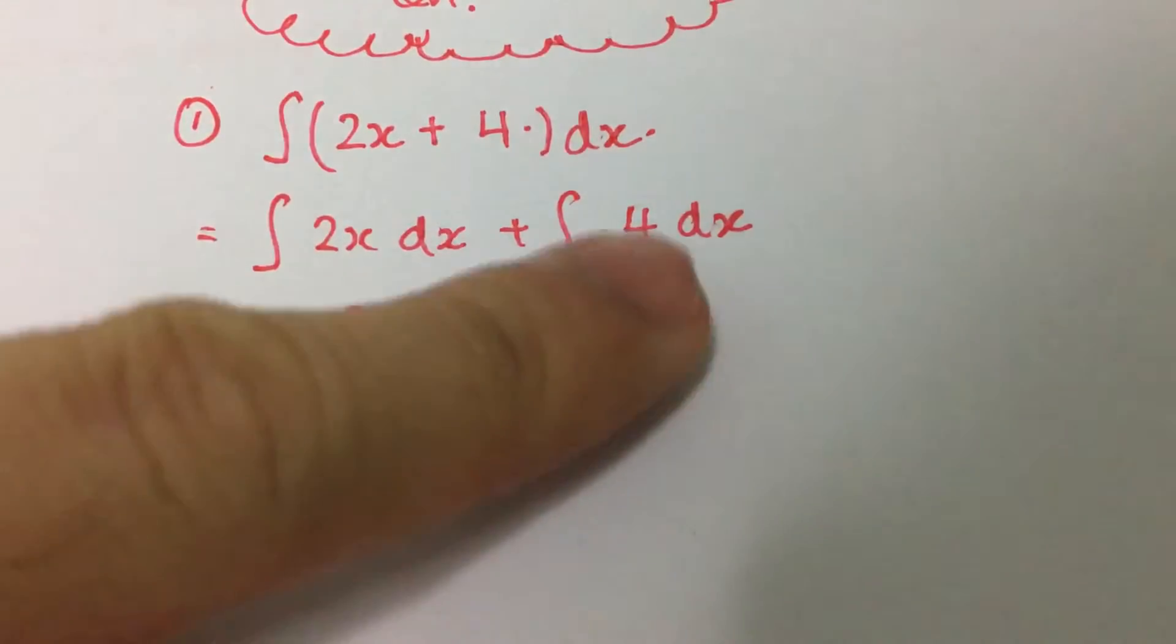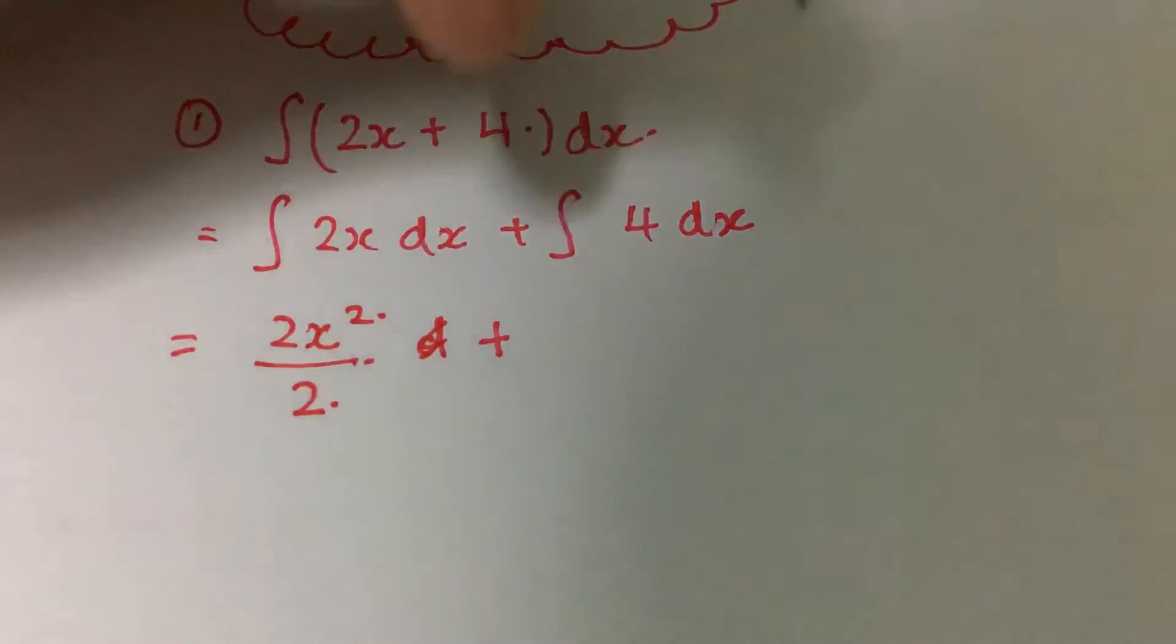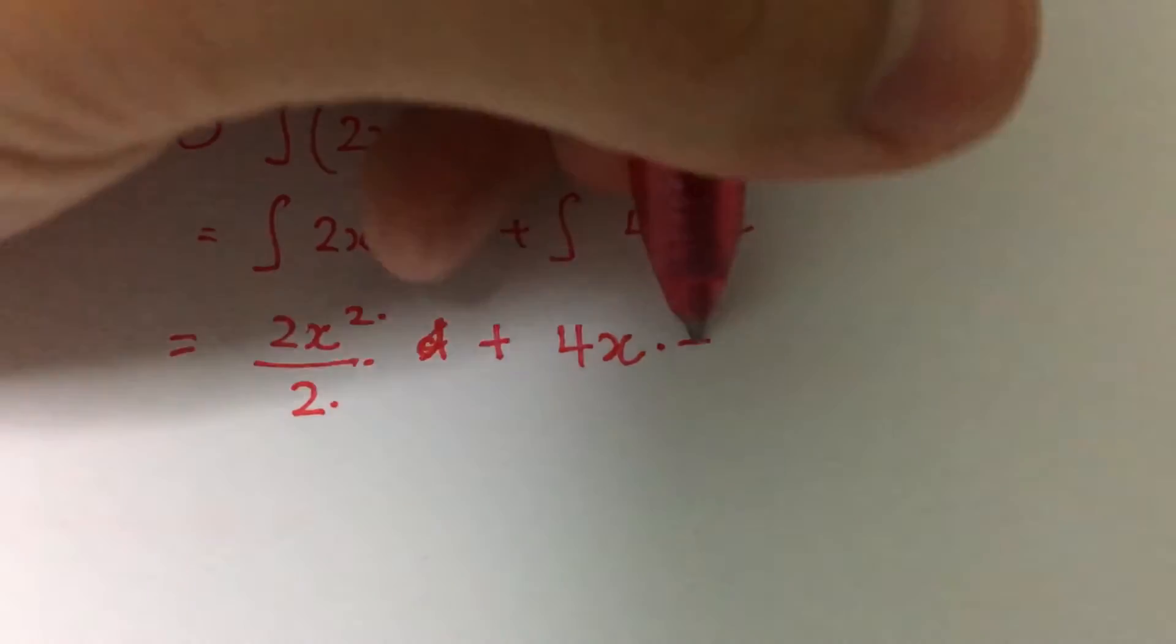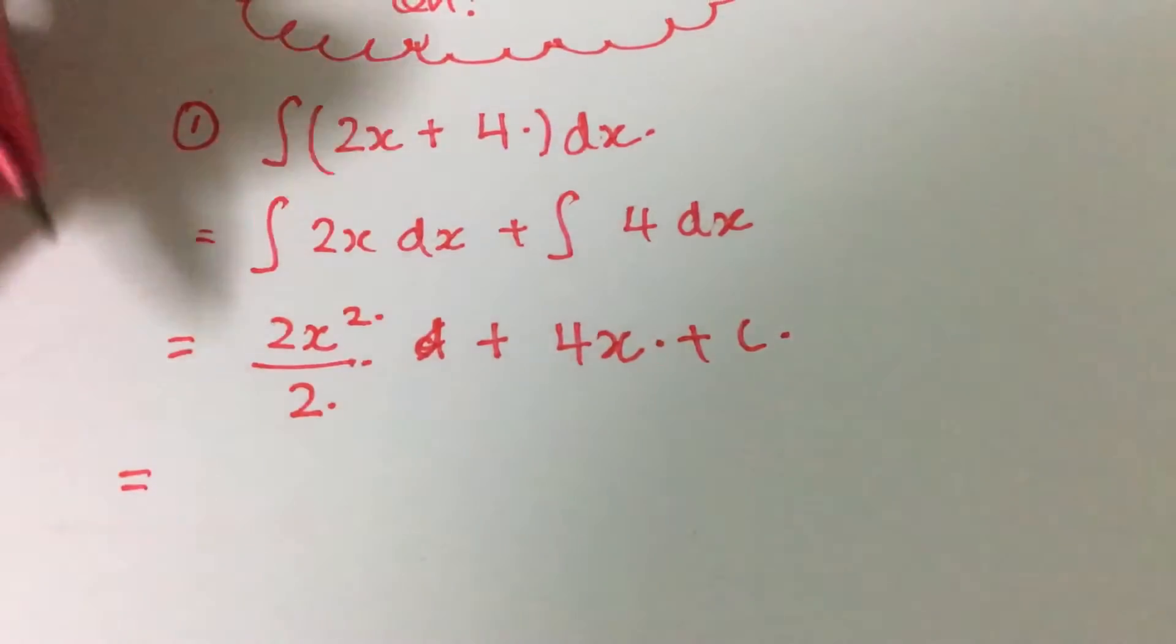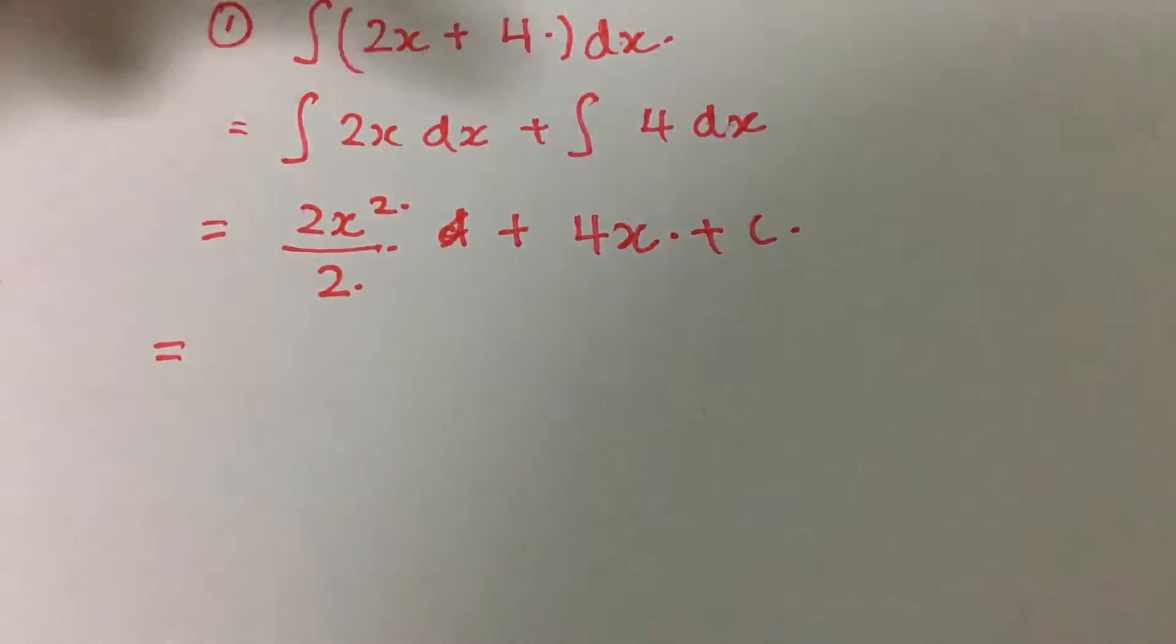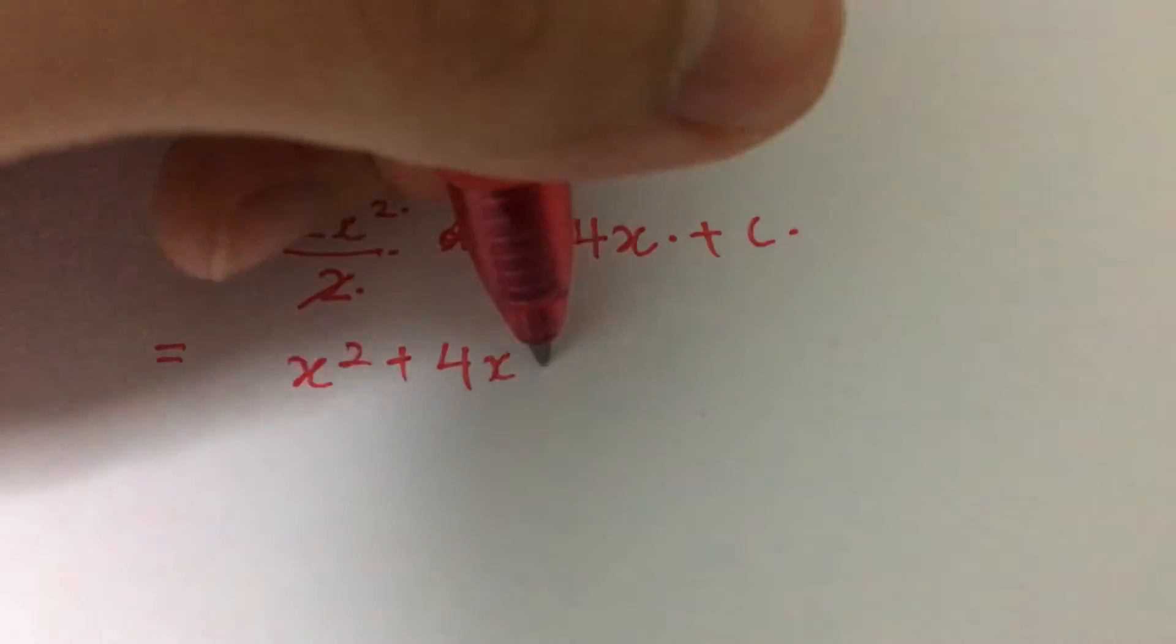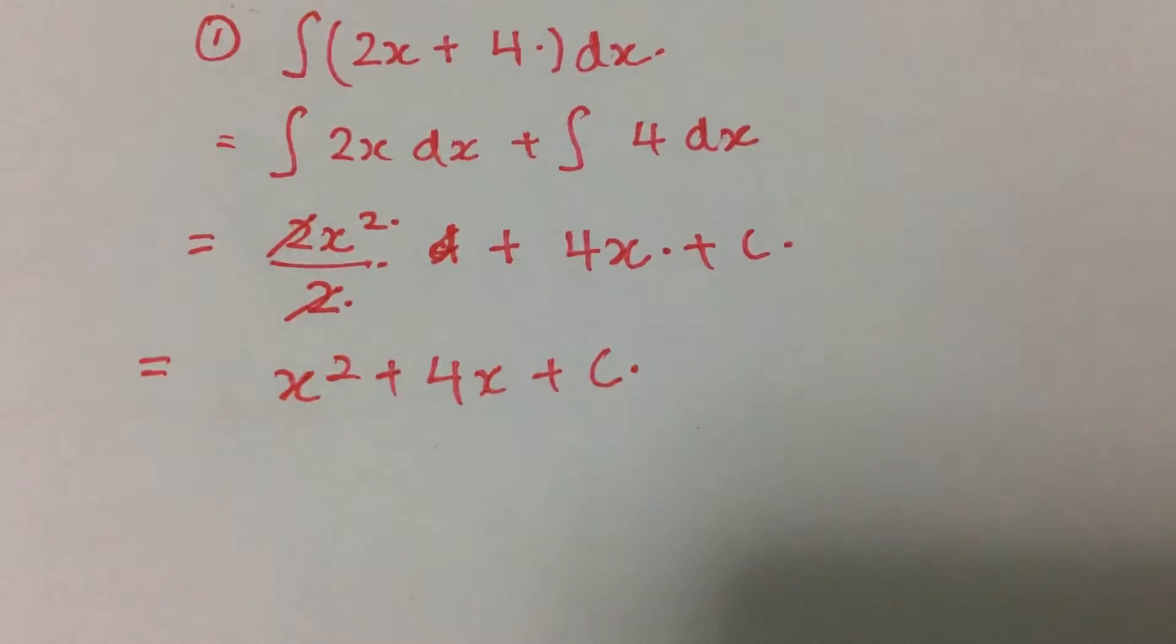For this one, integration of a constant, we'll just add an x behind and then plus c. So what we will get for this question is we just need to cancel the terms, you will get x squared plus 4x plus c. Let's take a look at the second question.